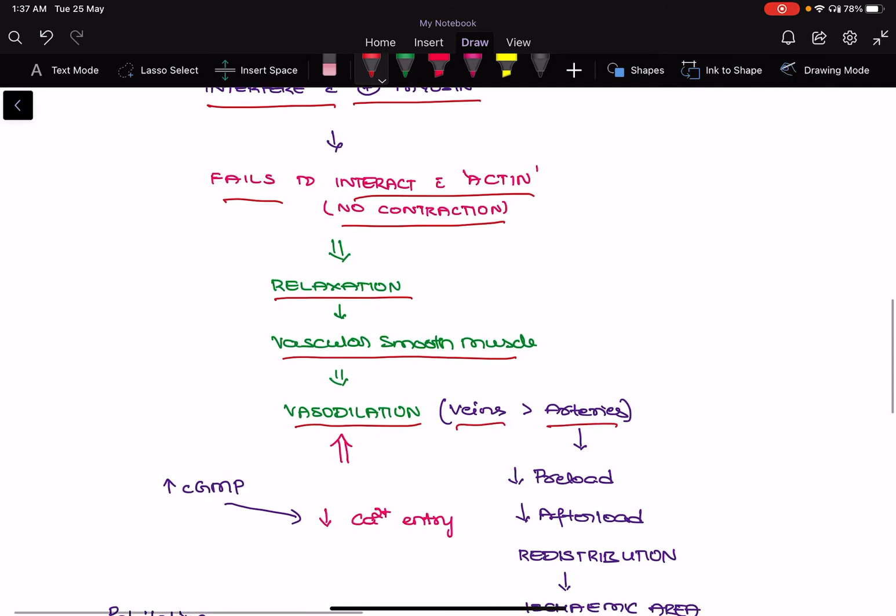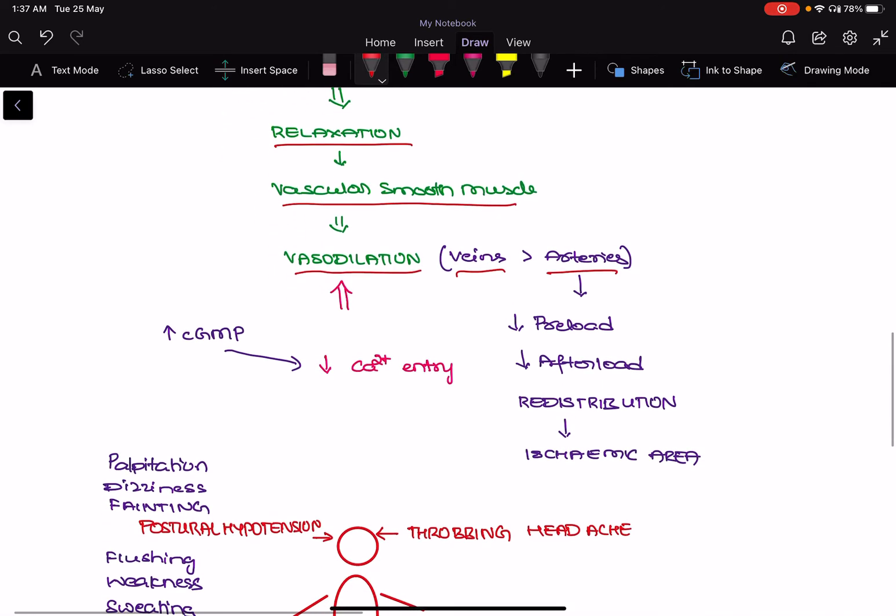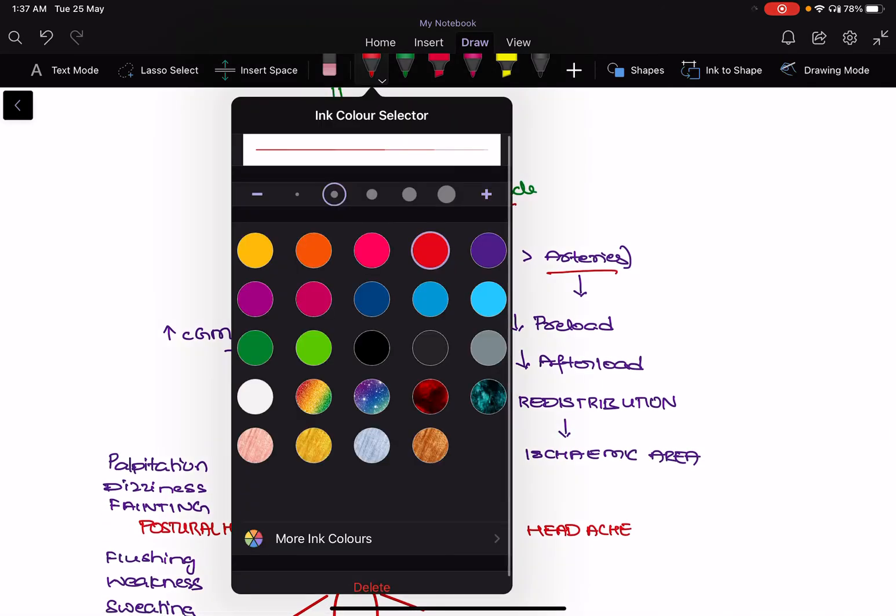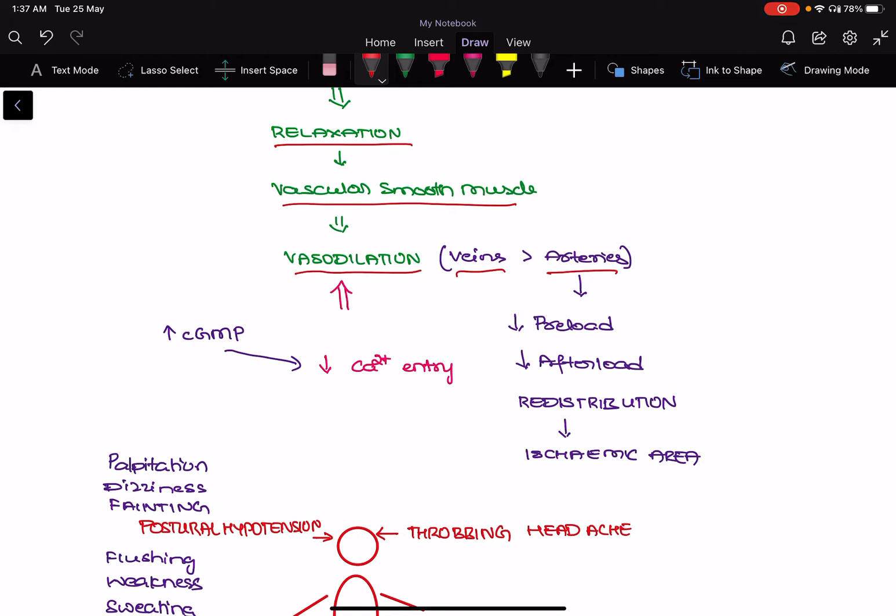One more mechanism which will help in relaxation of the vascular smooth muscle is the increase in cyclic GMP levels will help in reducing the calcium entry, which also contributes to the relaxation of the vascular smooth muscles.